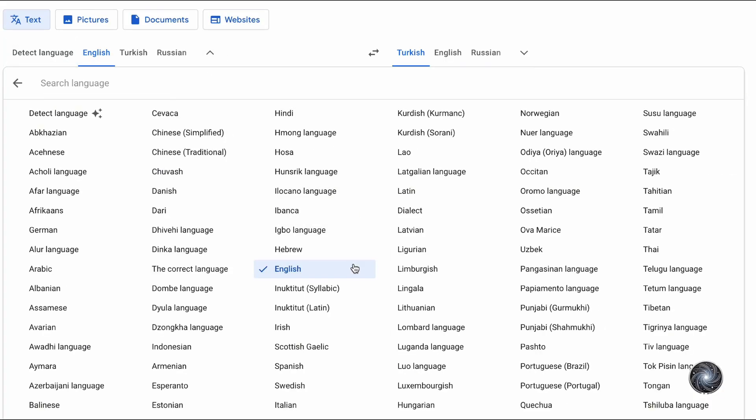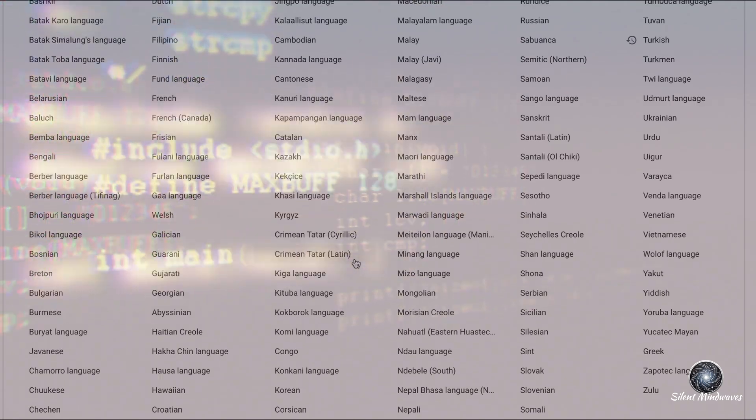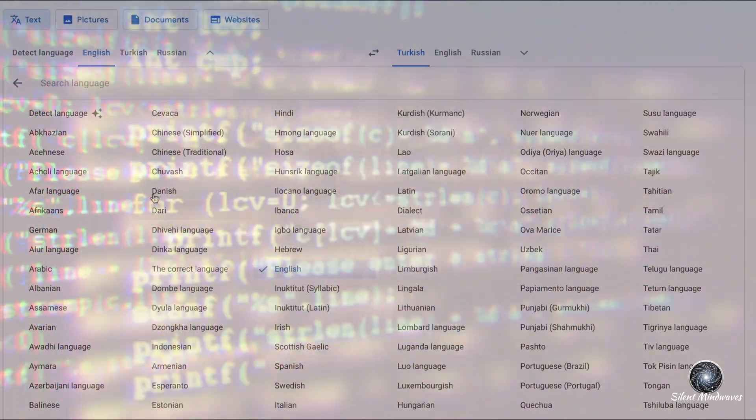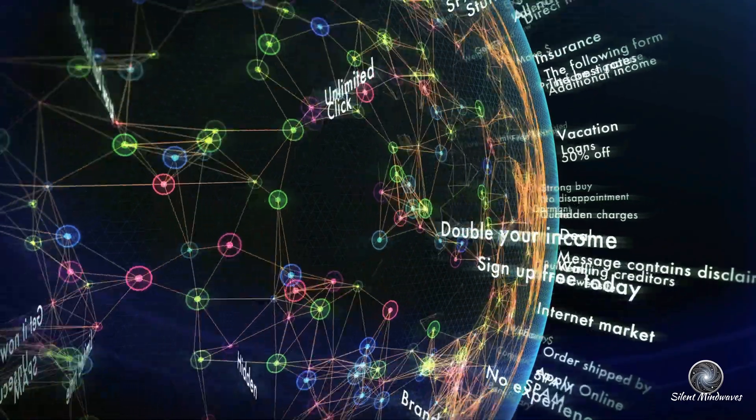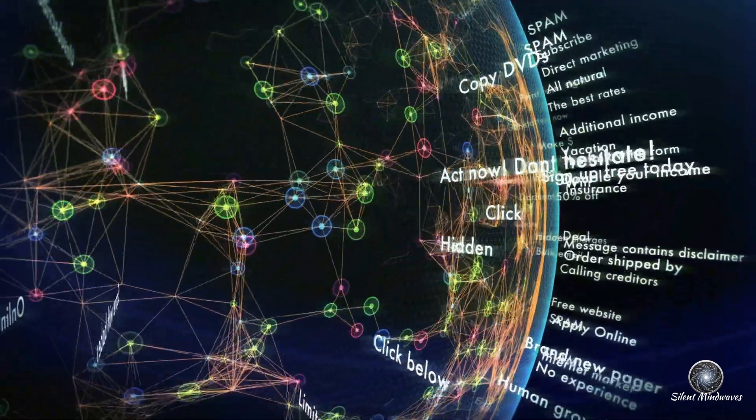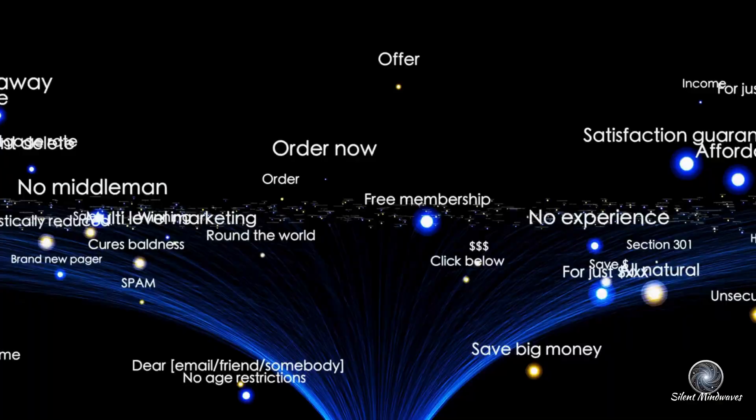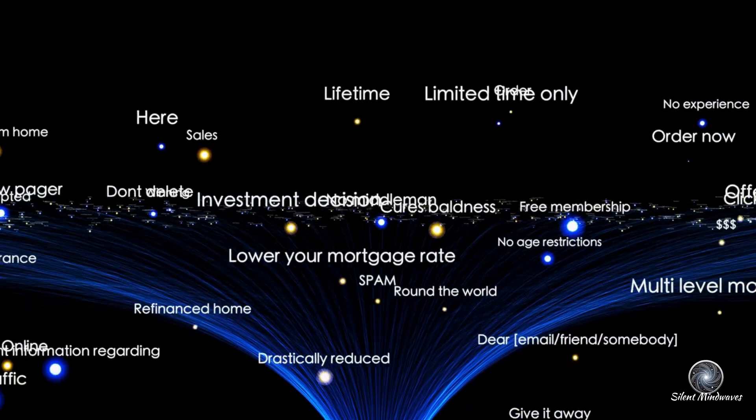It processes information at lightning speed to come up with logical outcomes. Have you ever used Google Translate? It's AI, analyzing millions of language patterns to give you accurate translations. Or think about spam filters in your email. They're AI tools that scan and classify billions of emails daily to keep your inbox clean. Pretty cool, right?